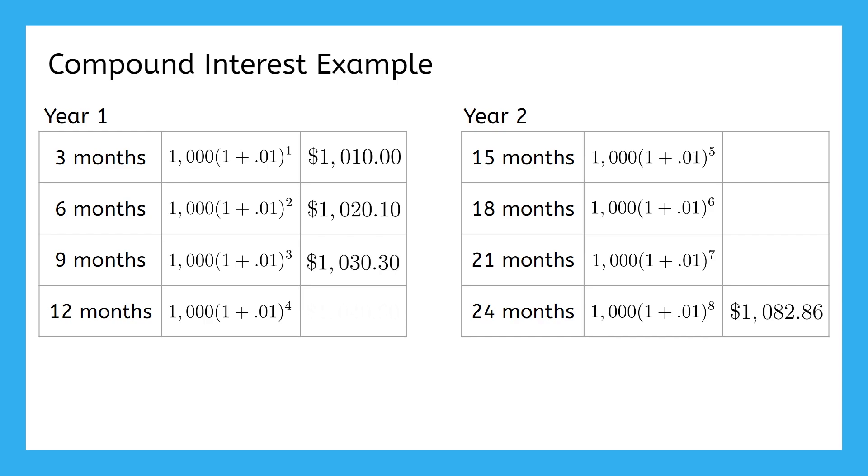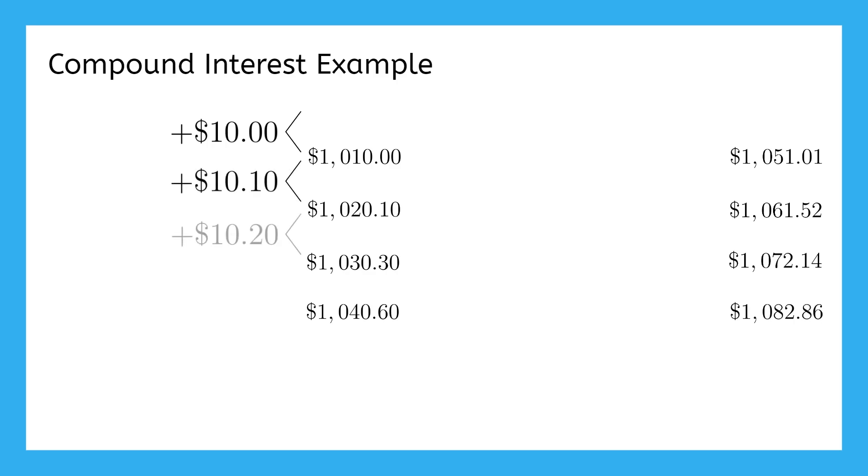As the compounding periods continue, the value of the account continues to grow. Did you notice anything about how quickly it grows? Each time interest accrued, it was more than the last time. This is why compound interest is so cool. It grows faster the longer you let it accrue.